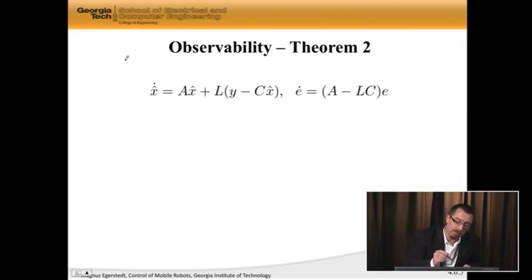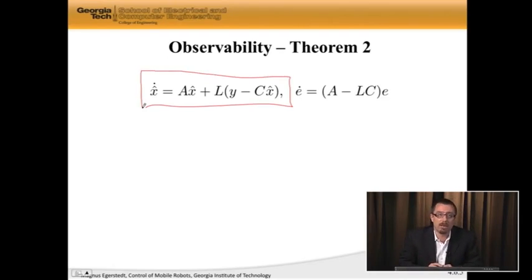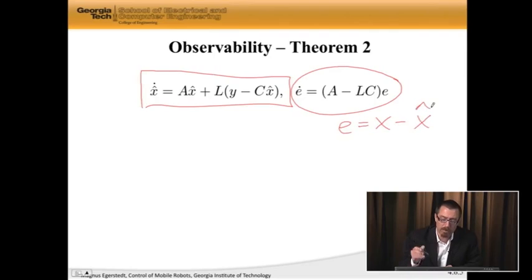So if we have this as my observer dynamics, and then I find the error dynamics, where E simply is the actual state minus my state estimate, what I wanted to do, of course, is drive E to zero. That's what I would like.